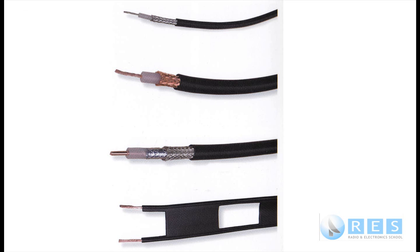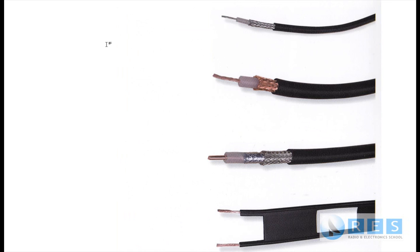All of the top cables are coaxial cables — the top three are coaxial cables. You don't have to know whether they're RG58 or RG59. They're just coaxial cables. And all coaxial cables are unbalanced.